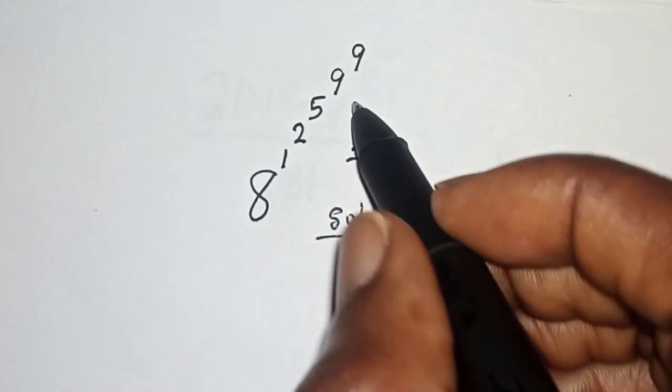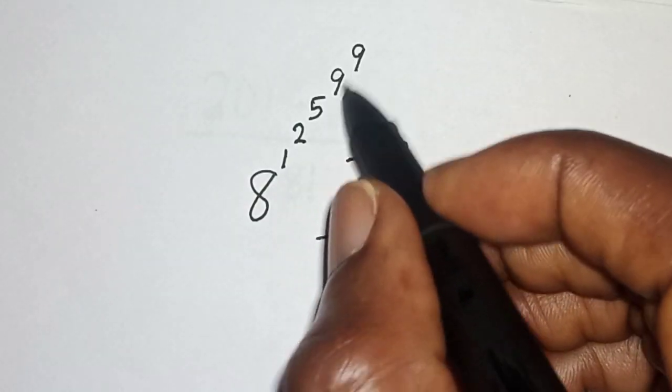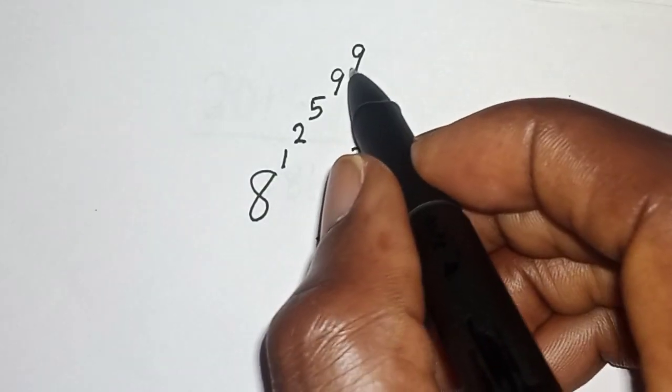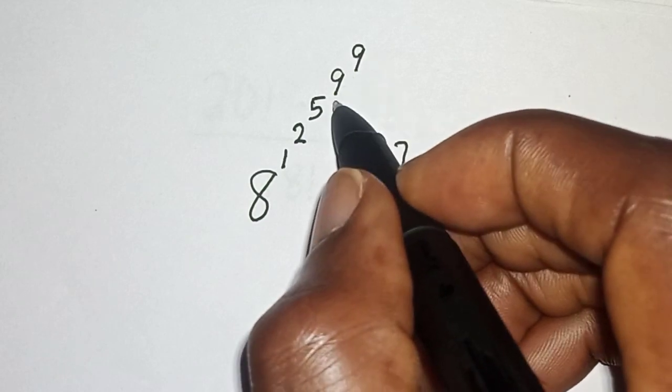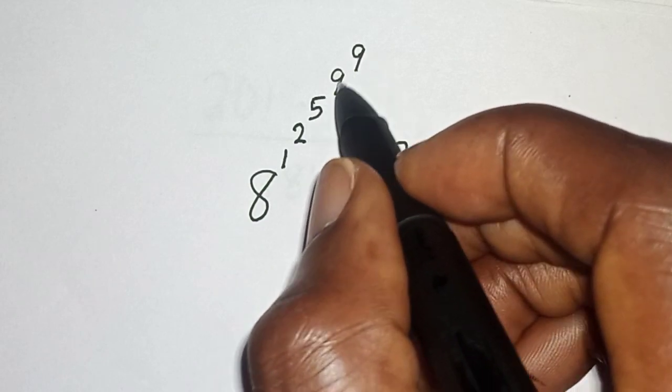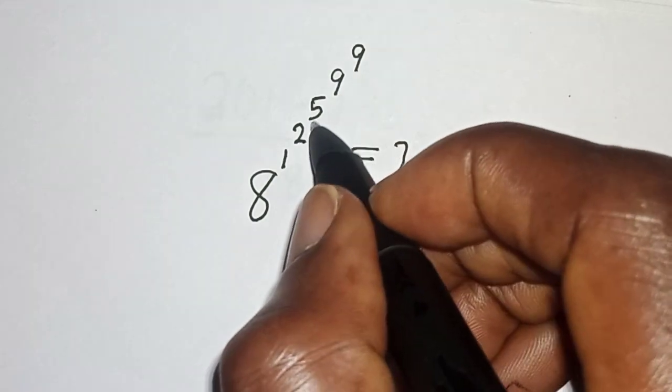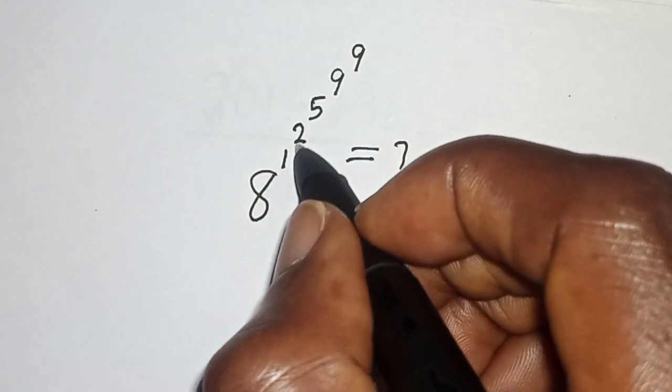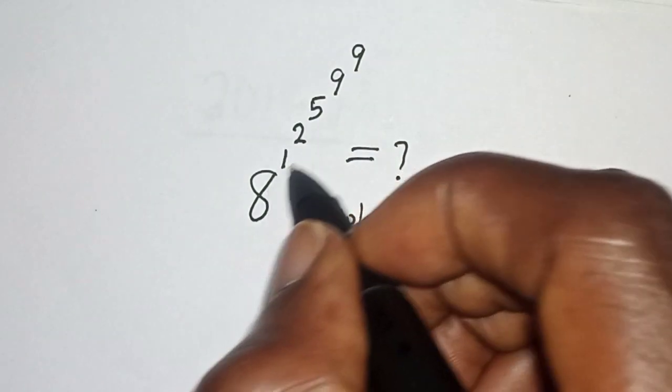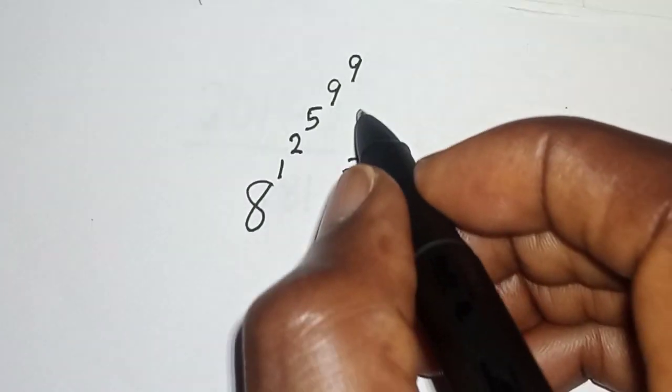Solution: Let's start. We're going to start solving it right from the top, that is this 9 raised to power 9, then answer here will be 5 raised to power the answer here, then 2 raised to power the answer here, 1 raised to power the answer here, and then 8 raised to power the answer here.